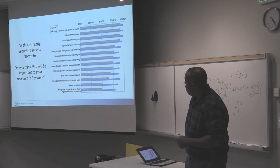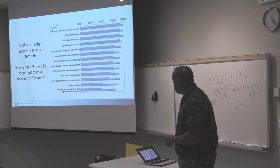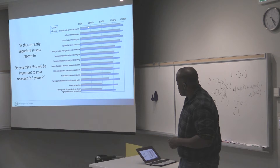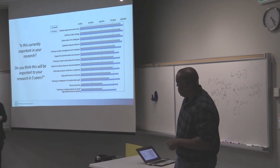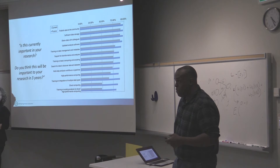We asked what things are important in their research now — shown in the grayish color — and what they think will be most important in the future — shown in blue. People talk about being able to publish data to the community, data storage, sharing data with colleagues. What's interesting is where you see what people need now versus what they think they'll need in three years — for example, cloud computing. People sense that this is going to be really important to them even if they don't know how to use it yet. So they're thinking ahead.